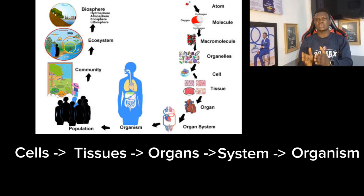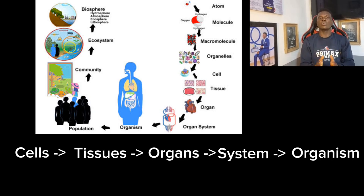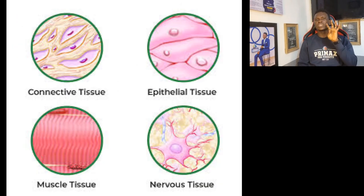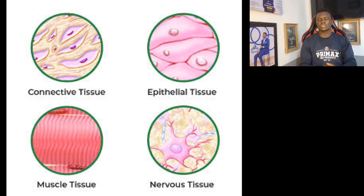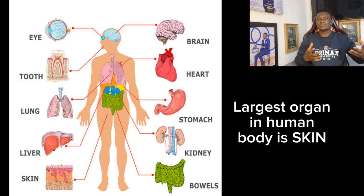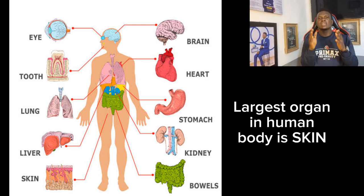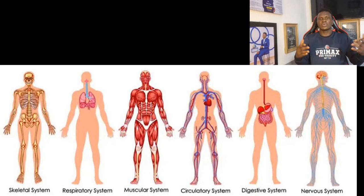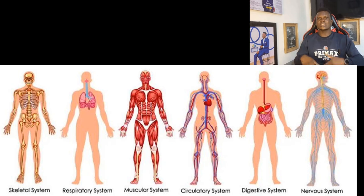For example, you have your red blood cell and your white blood cell — all of these cells come together to form the blood tissue. There are four major tissues: epithelial tissue, muscle tissue, nervous tissue, and connective tissue. These tissues come together to form organs such as the kidney, heart, and eye. Then organs form systems such as the skeletal system, transport system, respiratory system, digestive system, and nervous system.